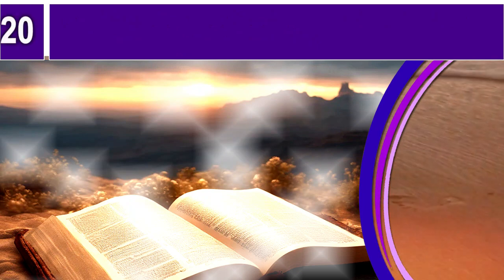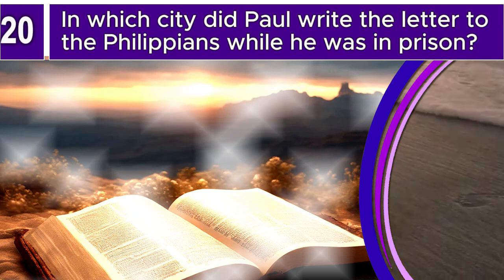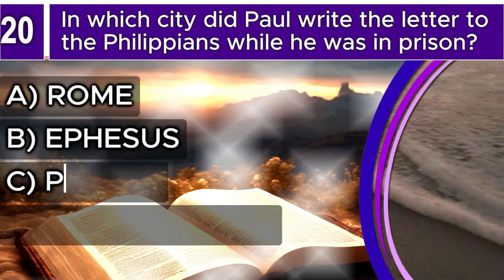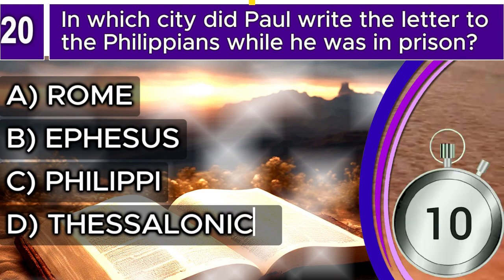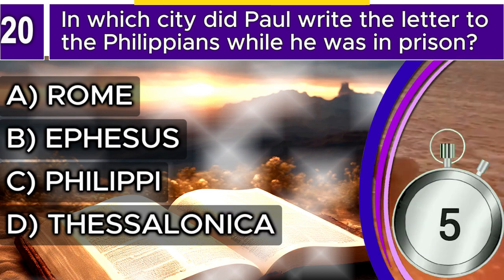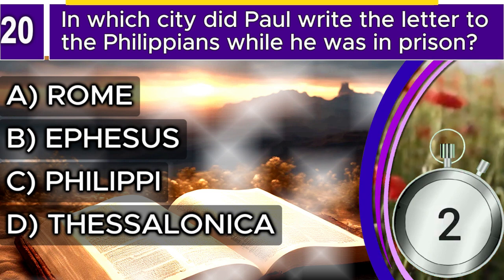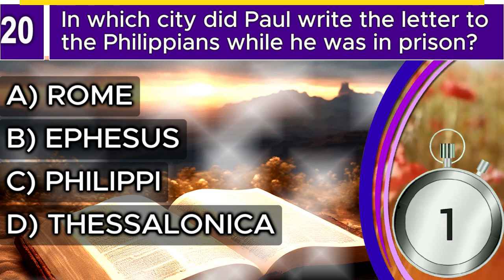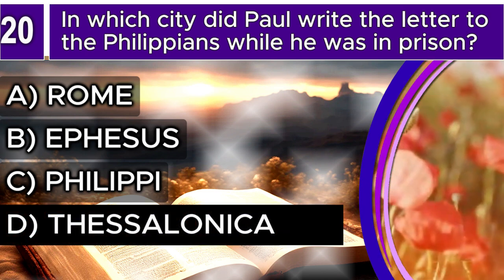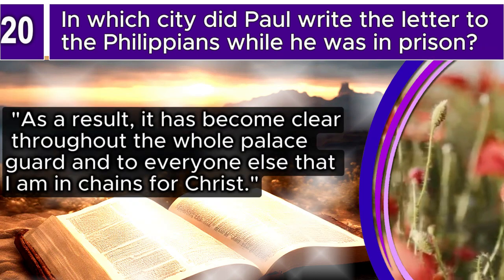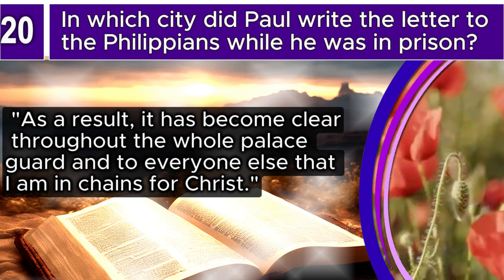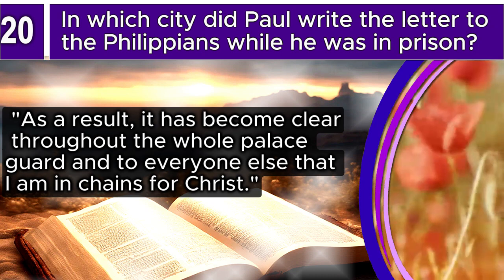Question 20. In which city did Paul write the letter to the Philippians while he was in prison? A. Rome, B. Ephesus, C. Philippi, D. Thessalonica. The correct answer is A. Rome. Philippians 1, verse 13 says: As a result, it has become clear throughout the whole palace guard and to everyone else that I am in chains for Christ.